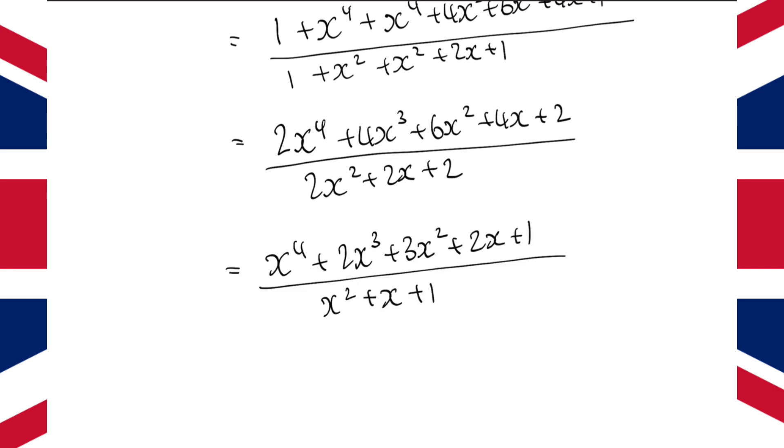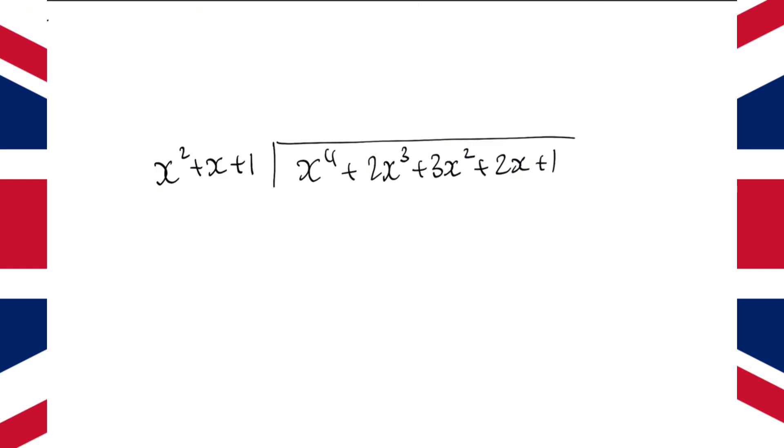Now we've got this polynomial division to do. So, let's go and do that. Normally when we do polynomial long division like this, you would typically see it with just a factor out of the front, like x minus 1, for example.